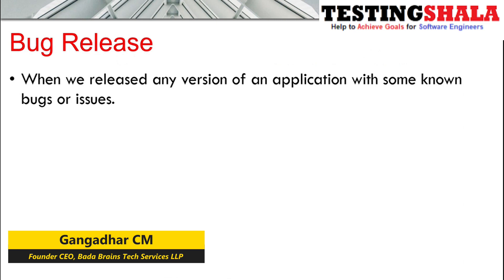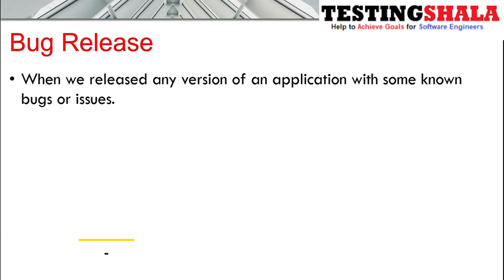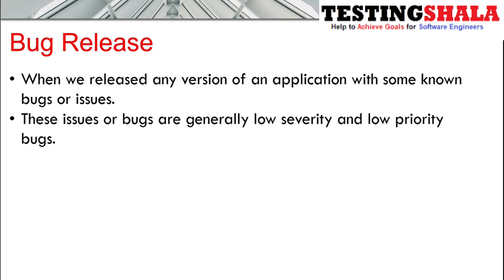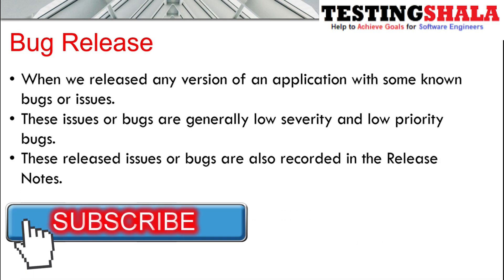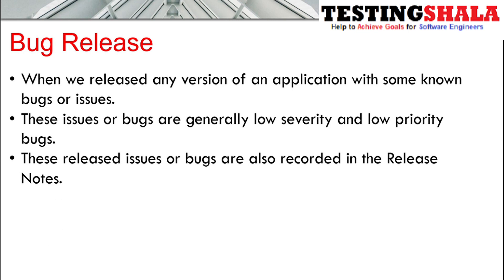Bug release is when we are shipping any product or releasing any application to the customer with certain known issues or defects. Those issues will be of low severity and low priority in nature — that kind of bugs only we will release to the customer. This will also be recorded in the release notes.